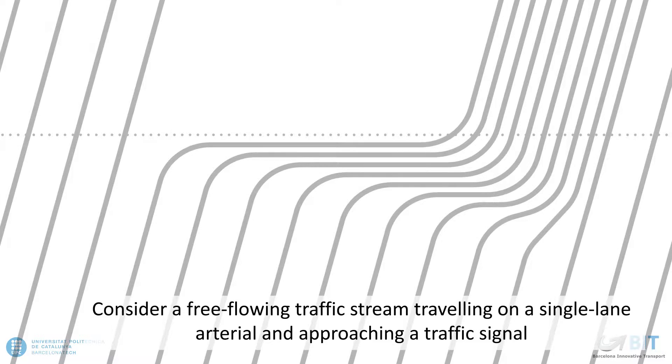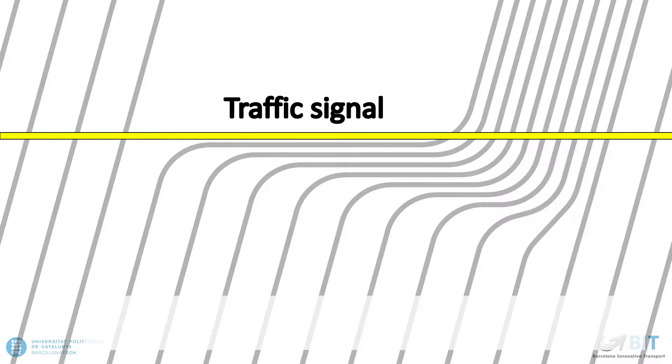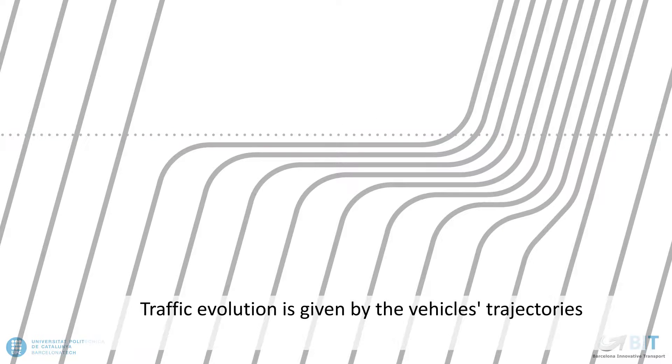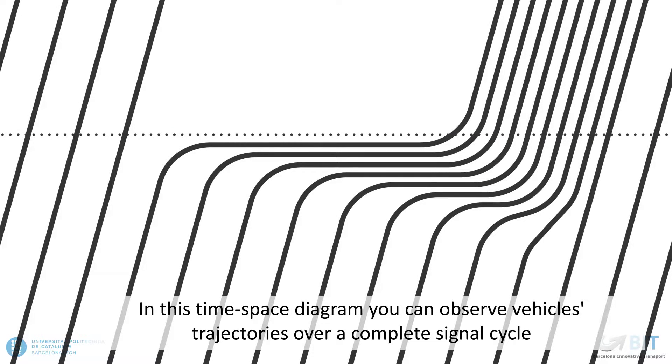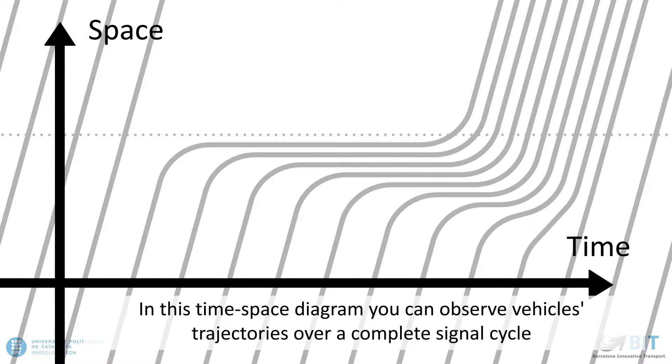Consider a free-flowing traffic stream traveling on a single-lane arterial and approaching a traffic signal. Traffic evolution is given by the vehicle's trajectories. In this time-space diagram, you can observe vehicles' trajectories over a complete signal cycle.